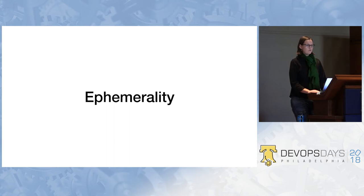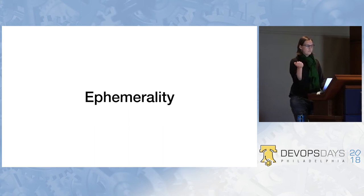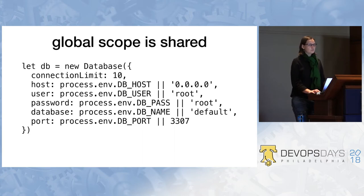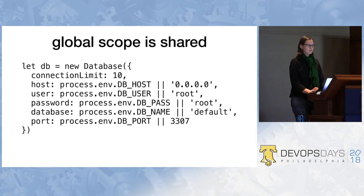One problem with serverless is that functions, the way we conceive of them, are intentionally very ephemeral — they're not supposed to leak any state externally other than returns. But what's completely unexpected is that Lambdas share the global scope. This should give you a pause: if you have something you don't want to create every time you run a function — something you'd normally cache by calling out to Redis — with a Lambda you just declare it in the global scope.